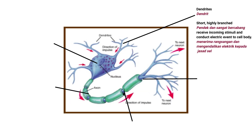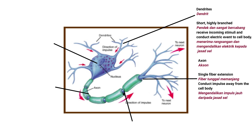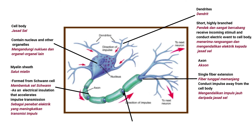The first structure in a neuron is dendrites — short, highly branched, receiving incoming stimuli and conducting electrical events to the cell body. Next is the axon: a single fiber extension that conducts impulses away from the cell body. The cell body contains the nucleus and other organelles. Myelin sheath is formed from Schwann cells as electrical insulation that accelerates impulse transmission.